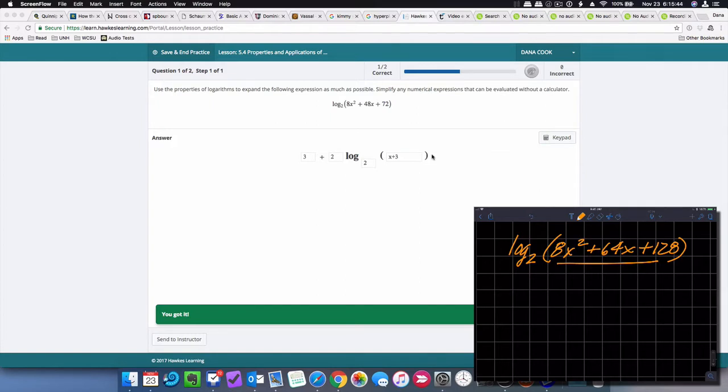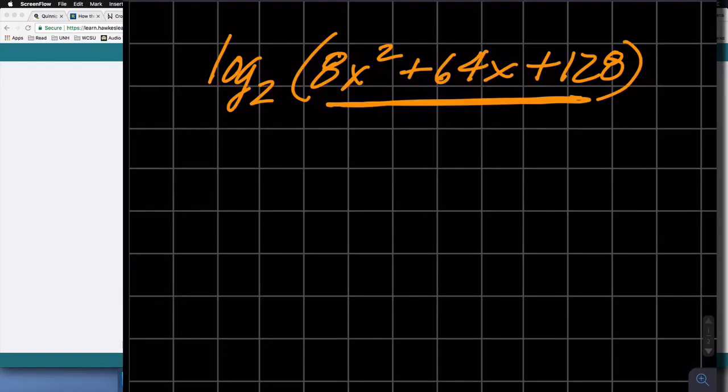So going back to our original problem from class, and we ran out of time, 8x squared plus 64x plus 128, the logarithm base 2 of that trinomial. So because I want to expand,